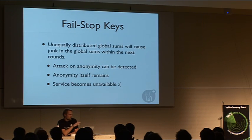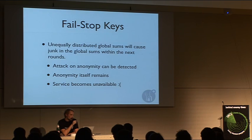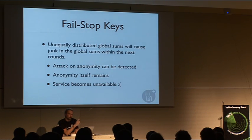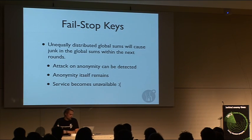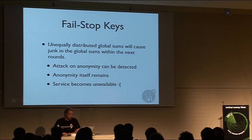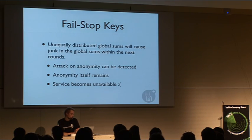Fail-stop keys cause unequally distributed global sums, producing junk in the global sums when an attack occurs. The attack on anonymity can be detected because if you don't observe your message on the network, you know someone attacked or tried to attack your anonymity. The downside is the service becomes unavailable: once junk appears in a global sum, it propagates into following sums. So when designing such a protocol, you also need to think about how to get the service restarted.